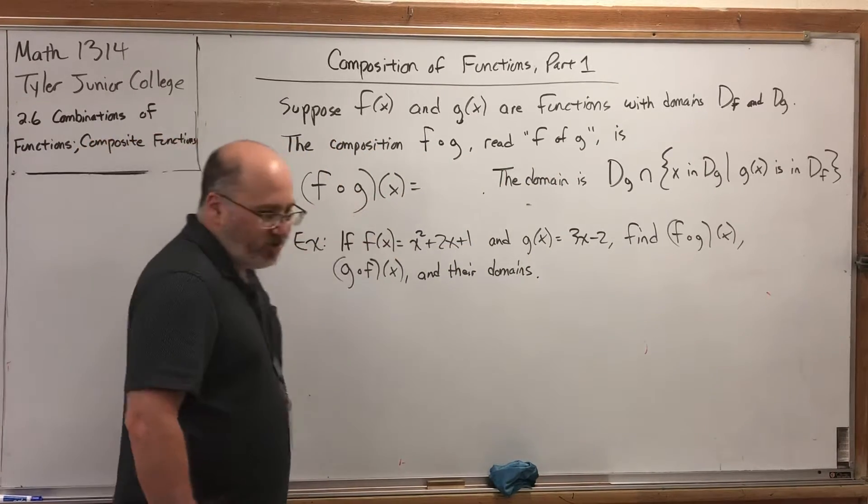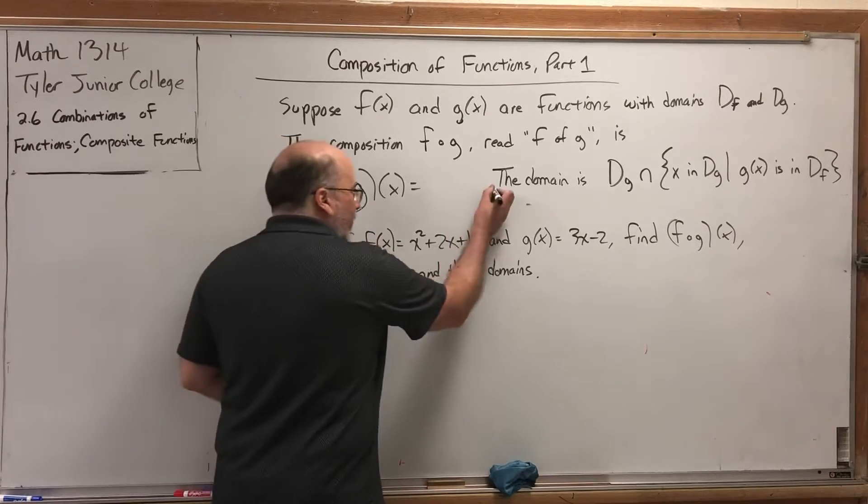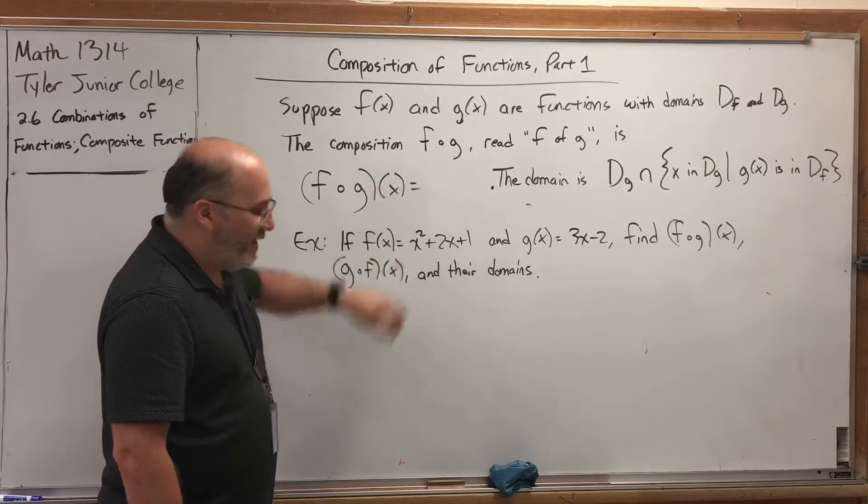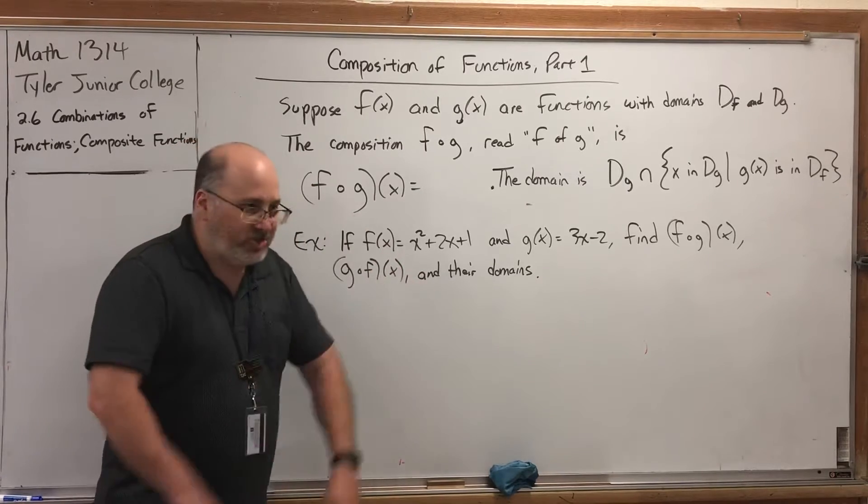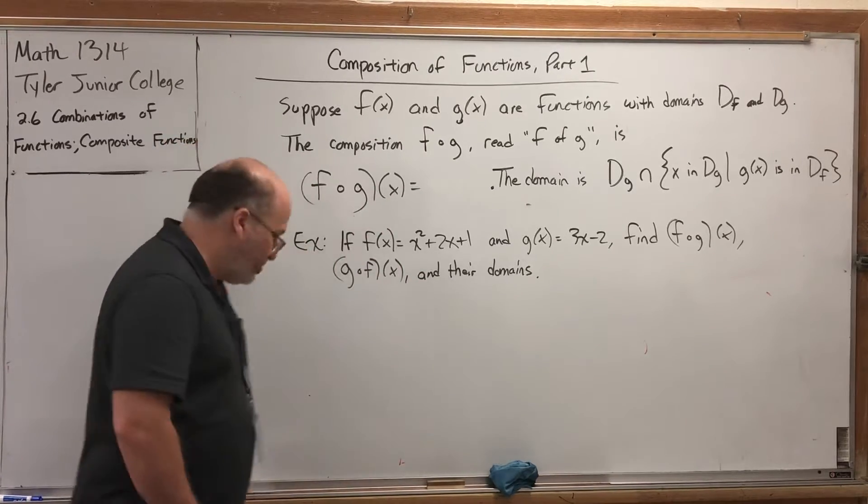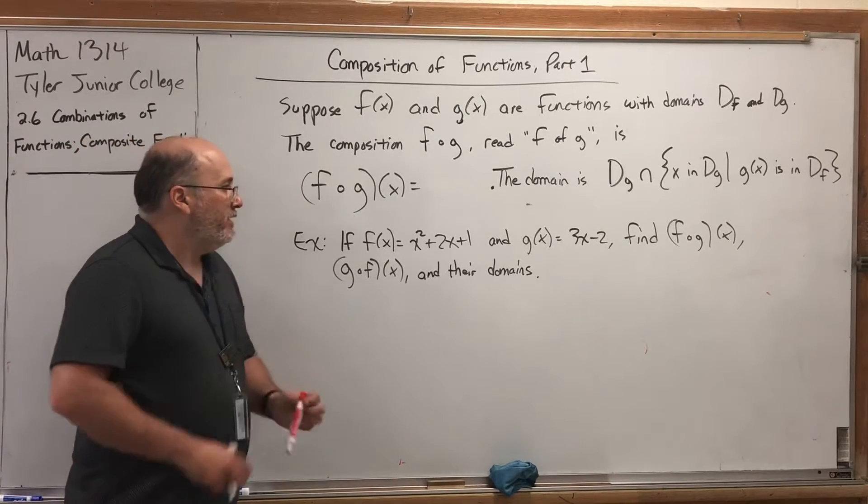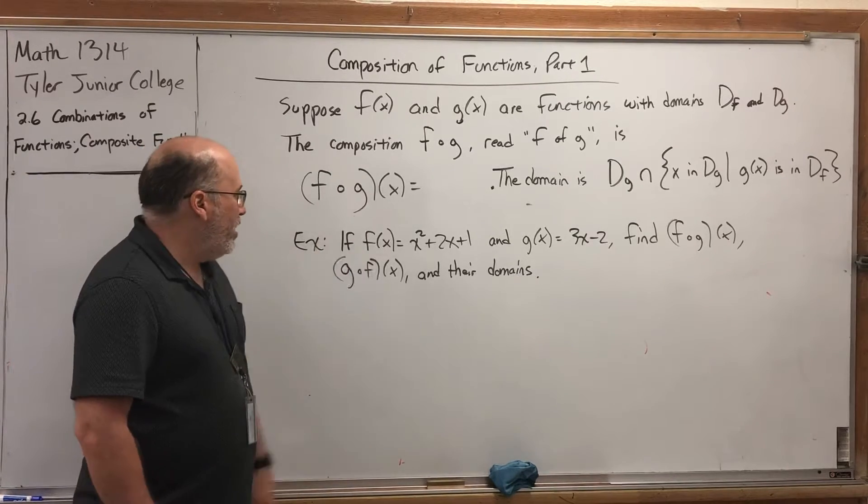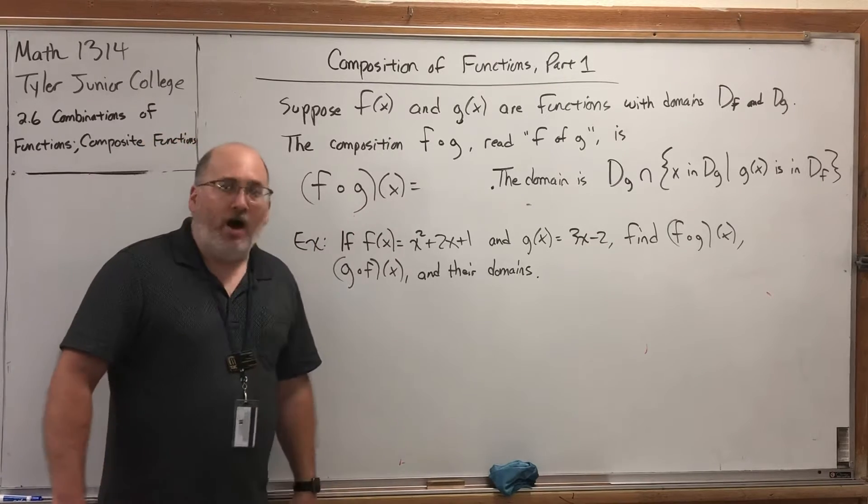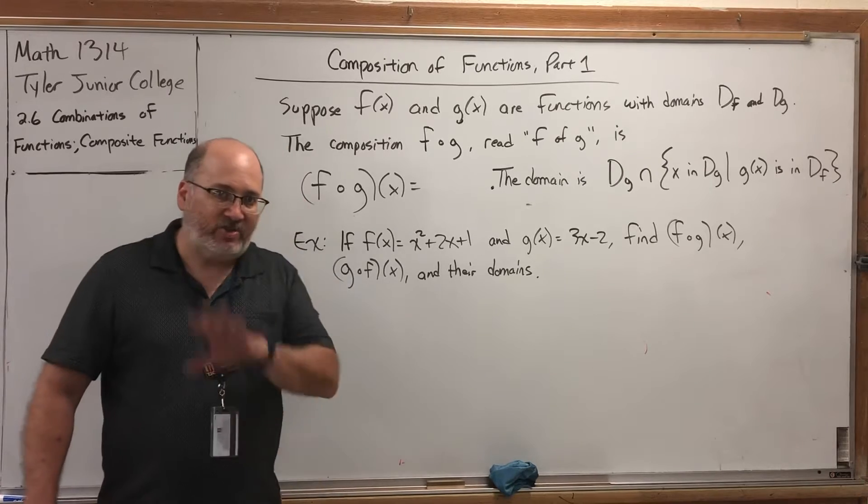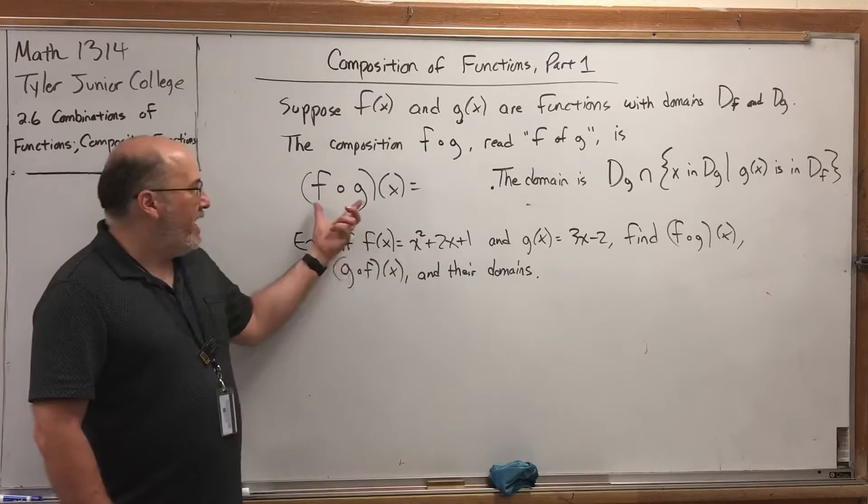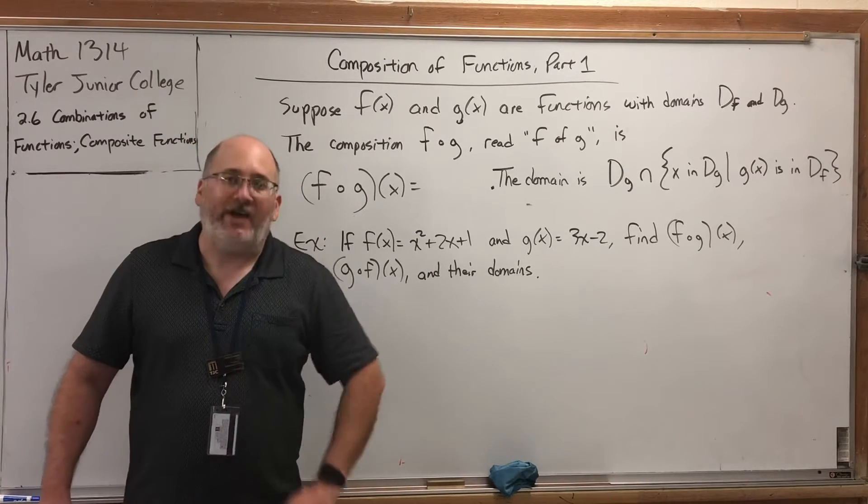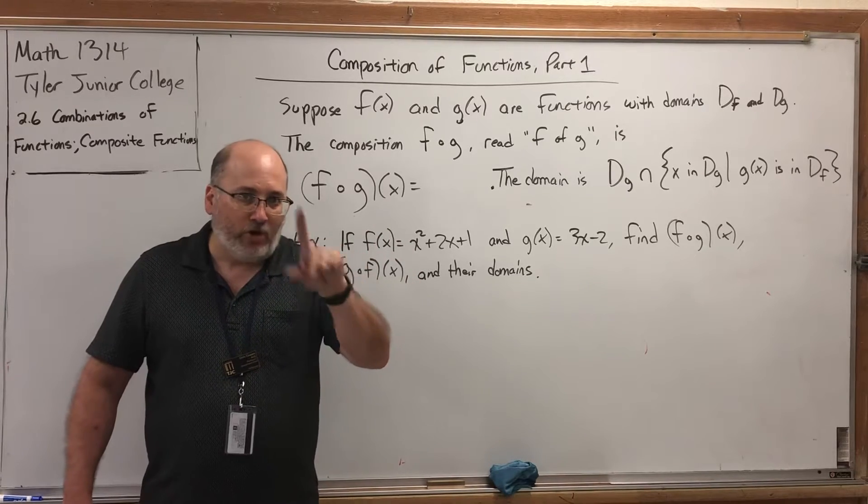But the composition f of g is defined this way. f of g of x is... Now the reason I left it blank is because I want you to listen to how you read this. This is read f of g of x. The definition is in how you read it, but you read it with a pause in a different place. Because I say the word of twice. f of g of x. Now I'm going to pause after the first of. So before, f of g of x. Now, f of g of x. Same words, same order, pause in a different place.